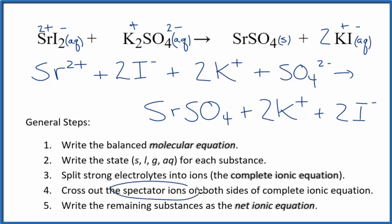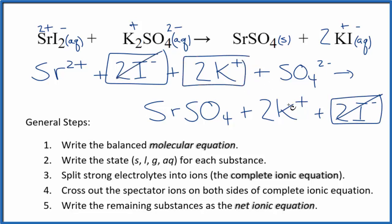Now we'll cross out the spectator ions. They're on both sides. In the reactants, I can see I have these two iodide ions right here. In the products, I have them again. Those are spectator ions. Cross those out. Two potassium ions. Two potassium ions. Again, spectator ions. We cross them out.